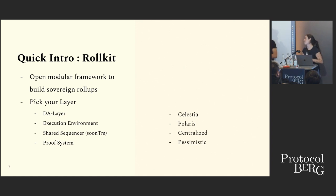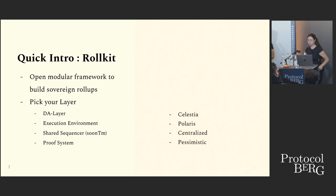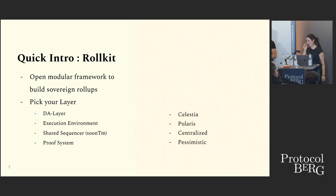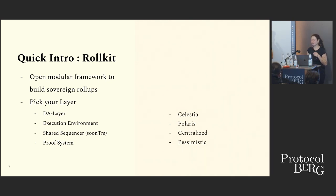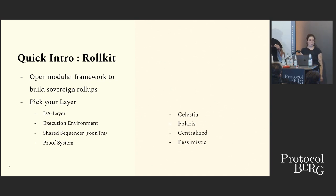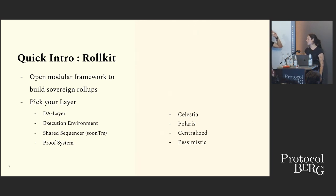Now that we have a light node running, we're going to put something on top of it. It's called Rollkit — an open modular framework to build sovereign rollups. Think of Rollkit as the glue connecting multiple interfaces together: at the bottom of the stack you have the DA layer, and at the top you pick your execution environment.